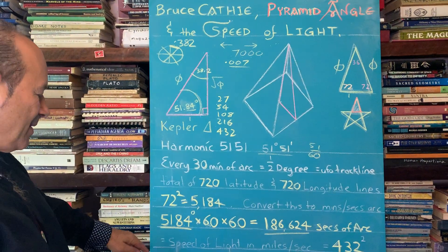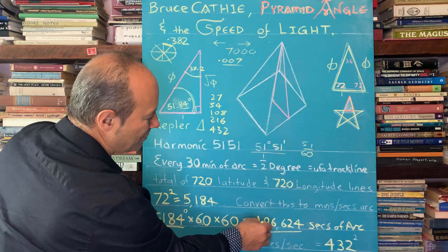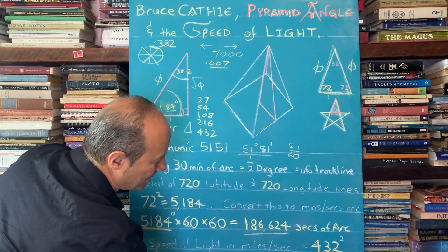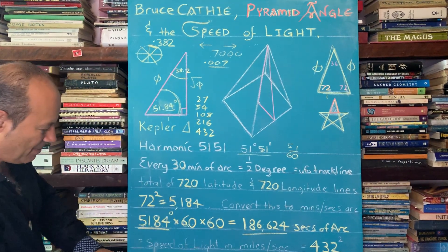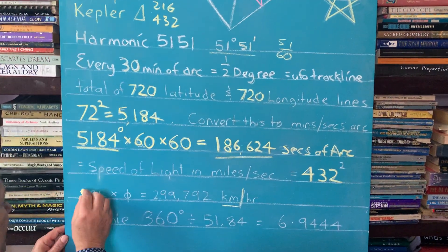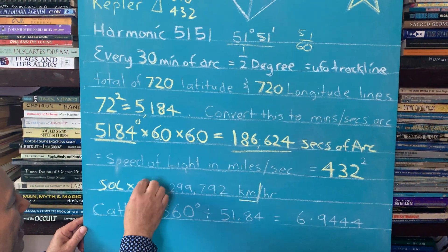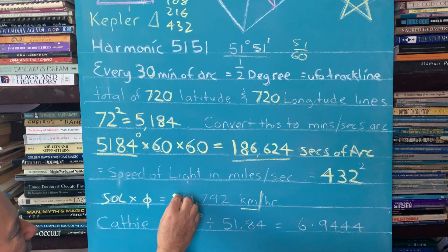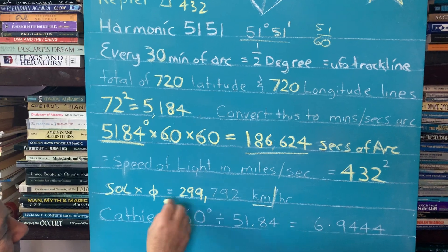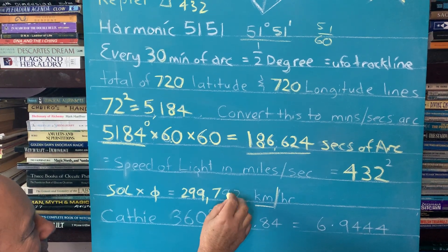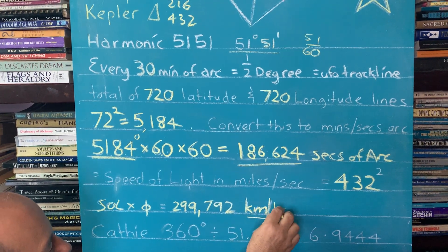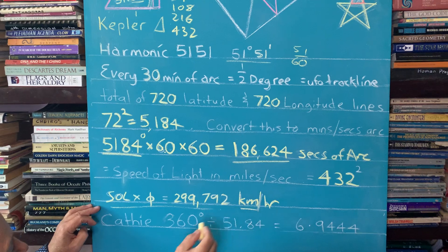If you wanted to convert 186,000, the speed of light into kilometers, because today we're using kilometers per hour, you multiply that number by the golden ratio 1.618. So the speed of light times phi, which means 186,000 times 1.618 multiplied, gives 299,792 kilometers. That's what we're using today per hour. That's the speed of light in kilometers.